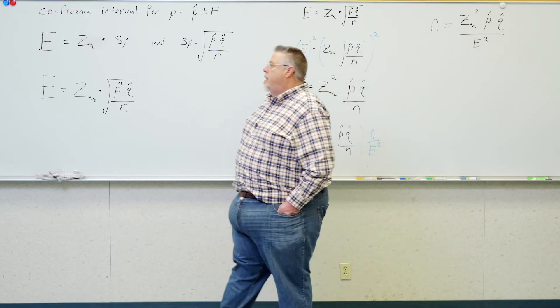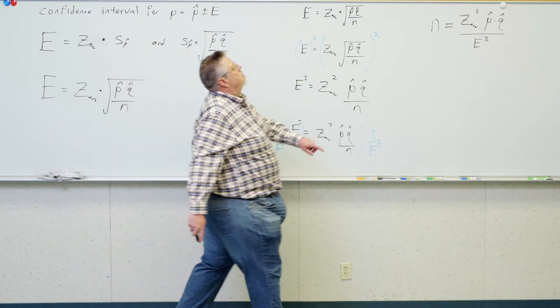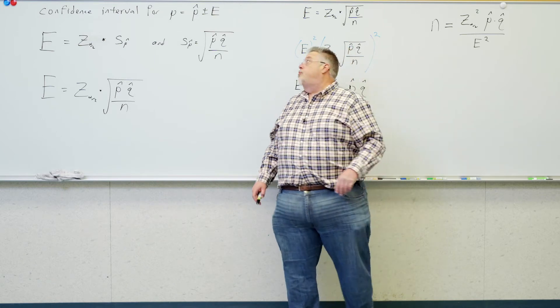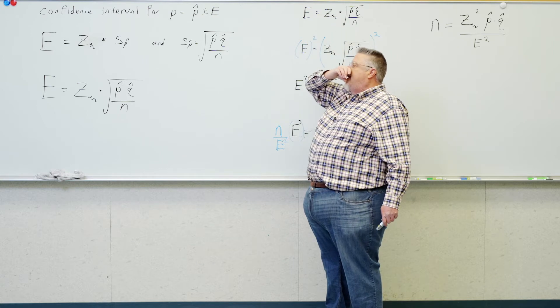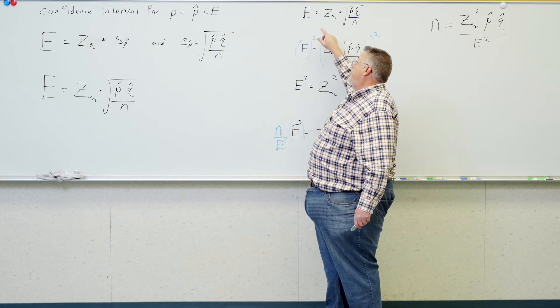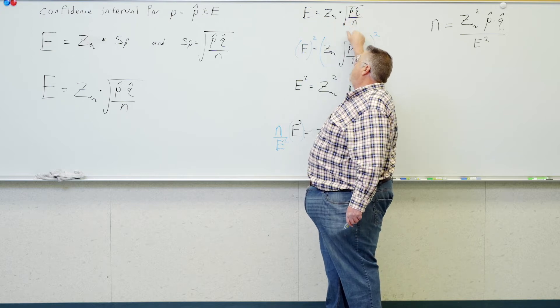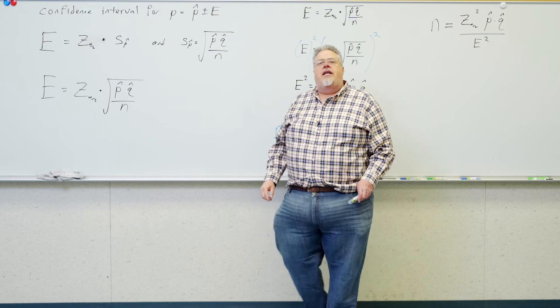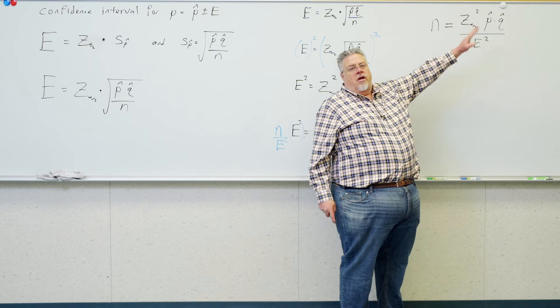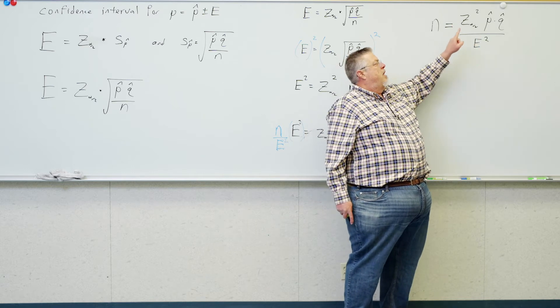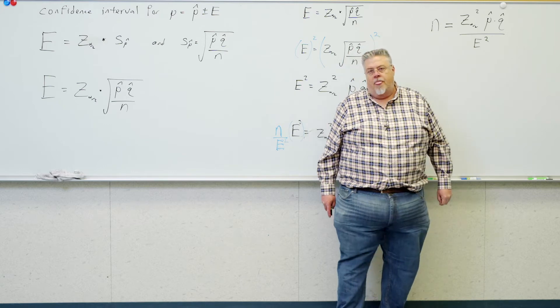But my e squareds are going to cancel out here. And my left side is just going to be n. On the right side, the n's cancel. I've got z of alpha over 2 squared times p hat times q hat over e squared. Algebraically, that equation is algebraically the same as this equation. Just rearranged it. What I've done here is I've rewritten this in an equivalent, but more convenient form for plugging in z, p, q, and e, and getting n.